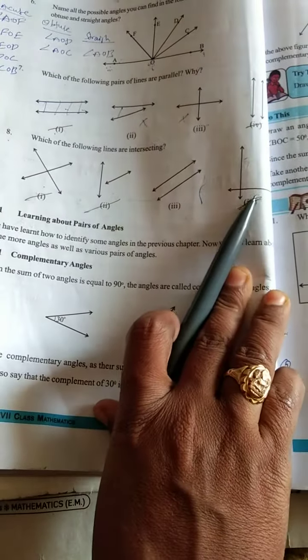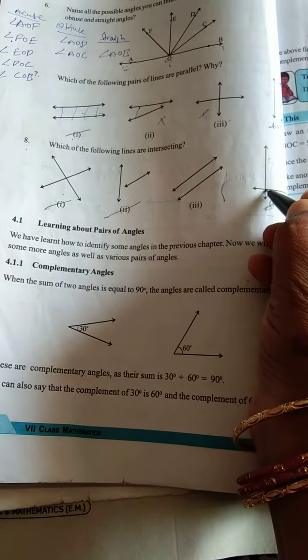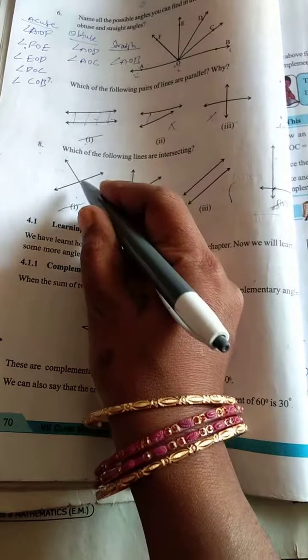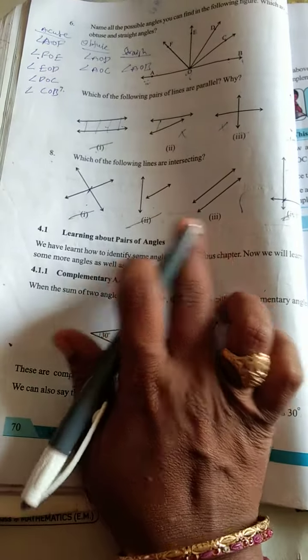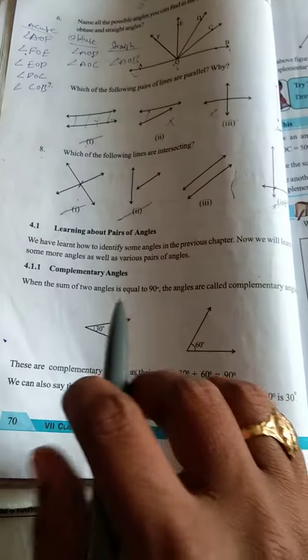Next, fourth one. First one, fourth one are intersecting lines. Why? Because these two lines have one common point, meeting point one. So these are intersecting lines. These two are not intersecting. One, two only intersecting lines.